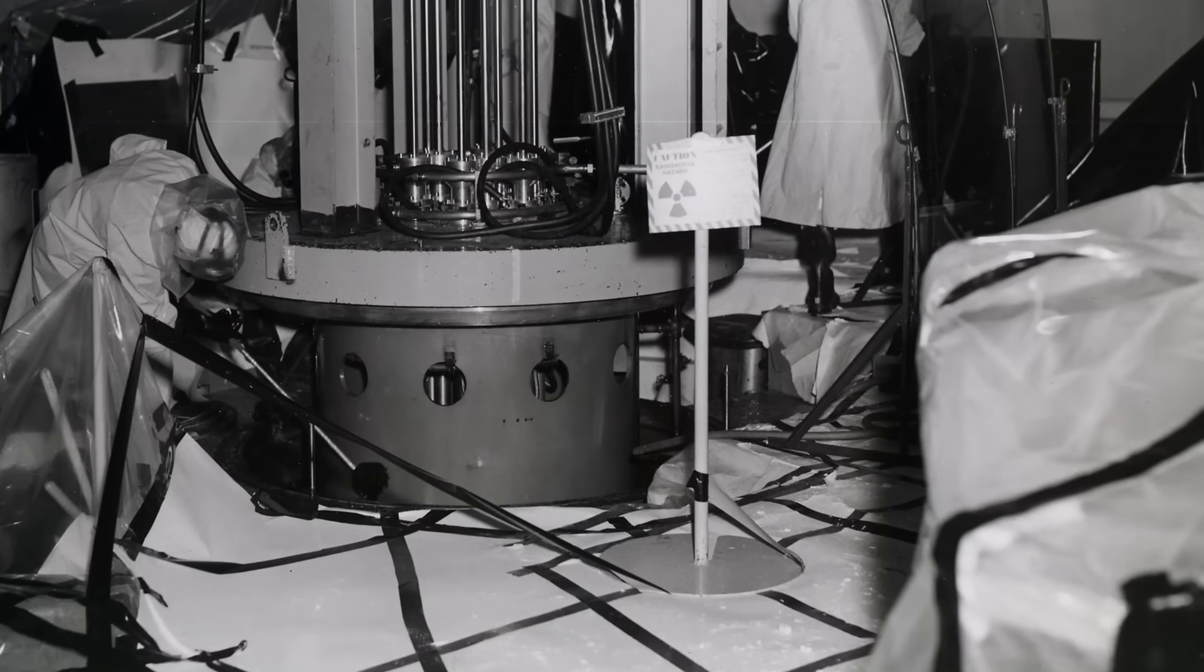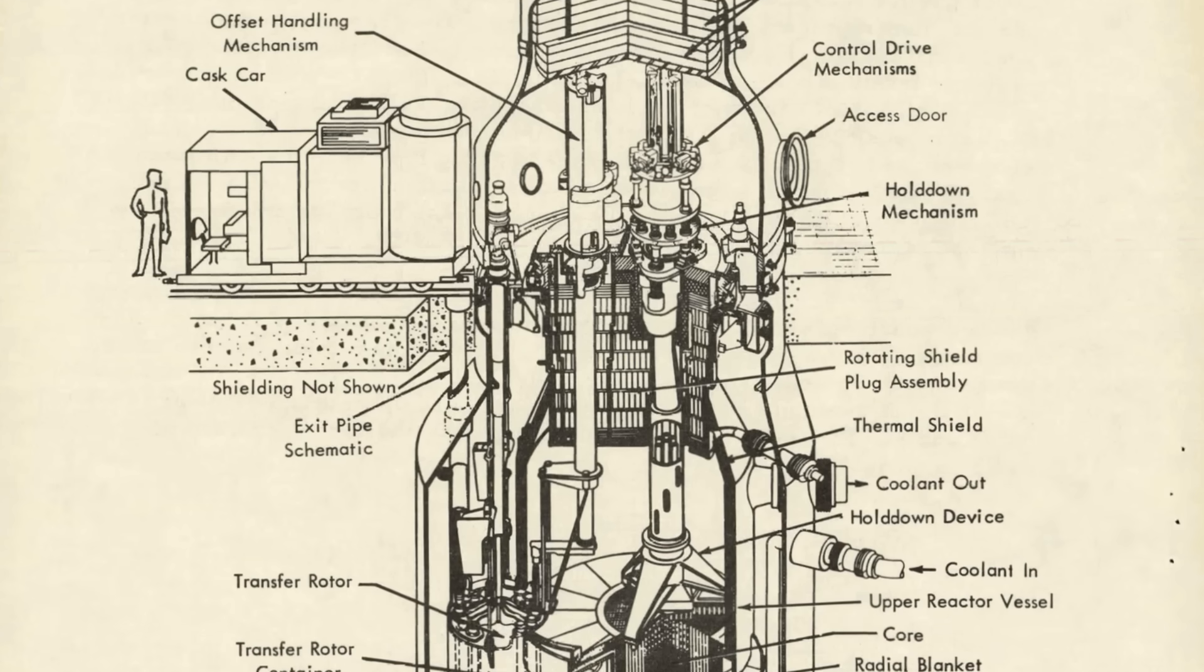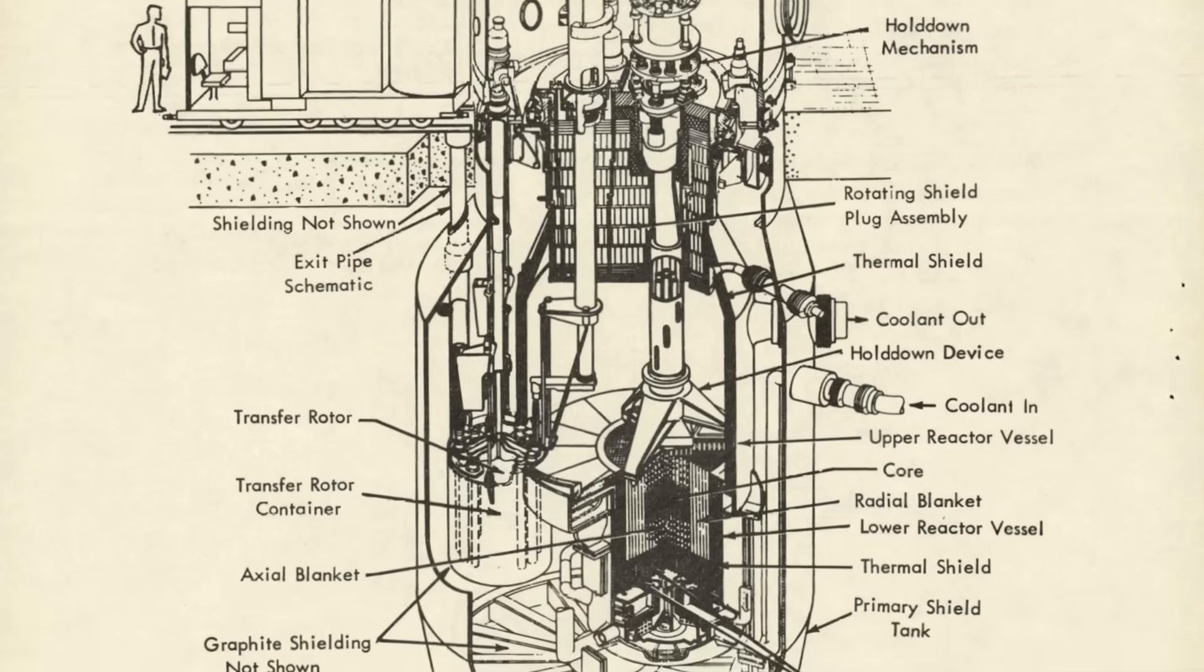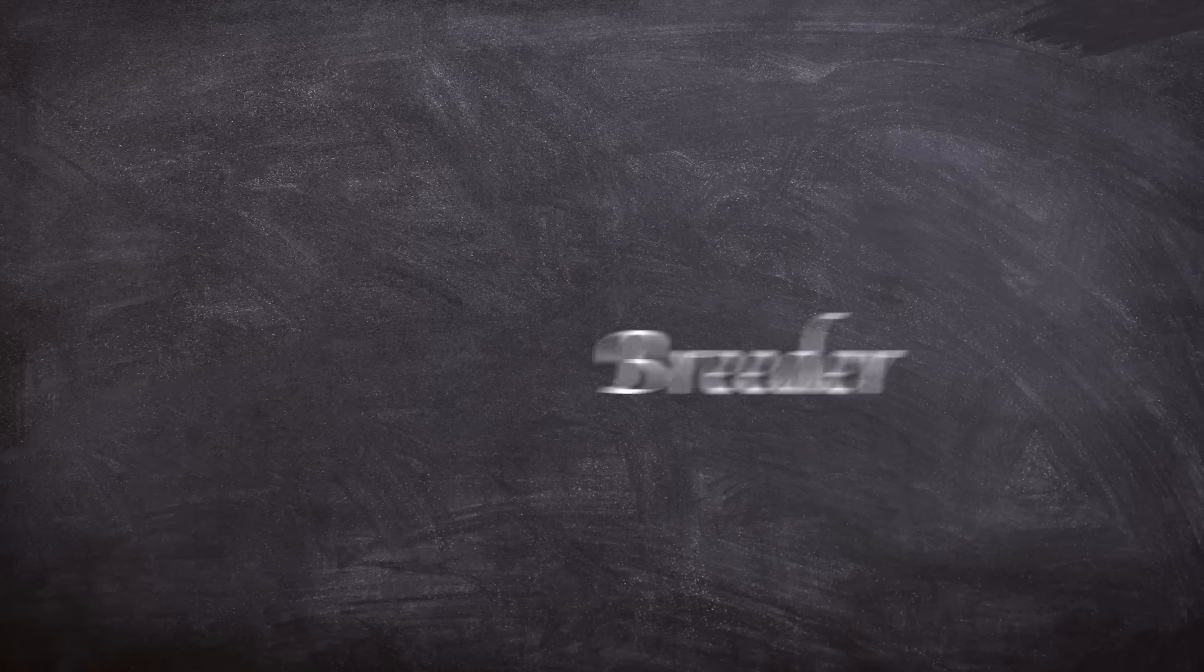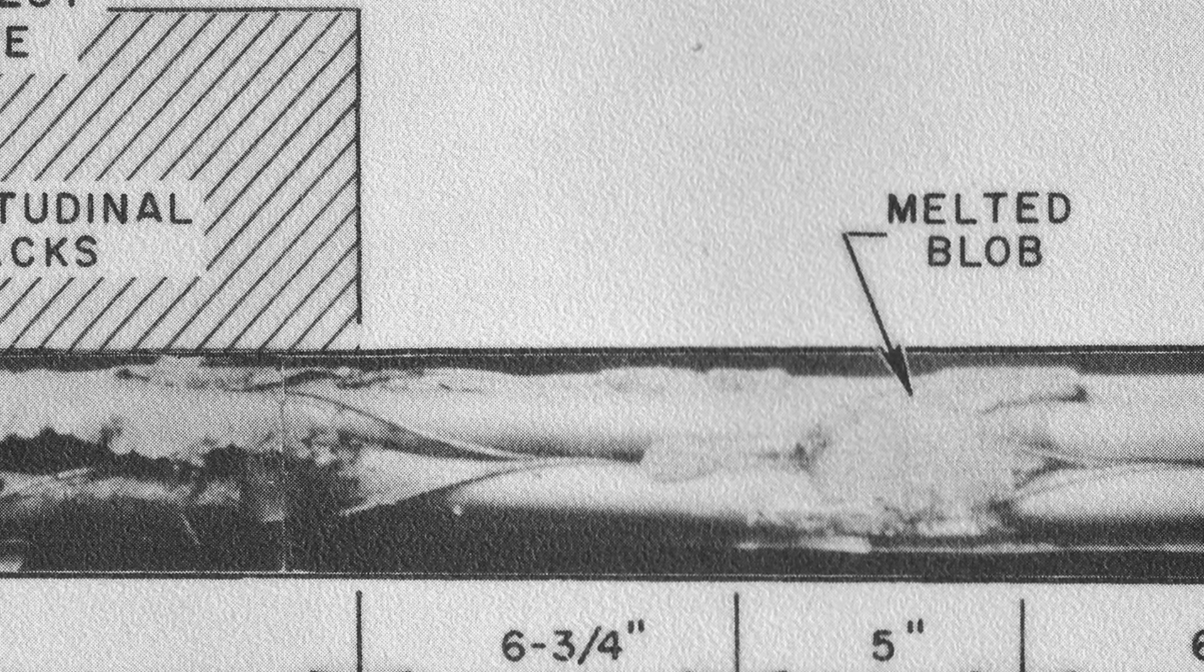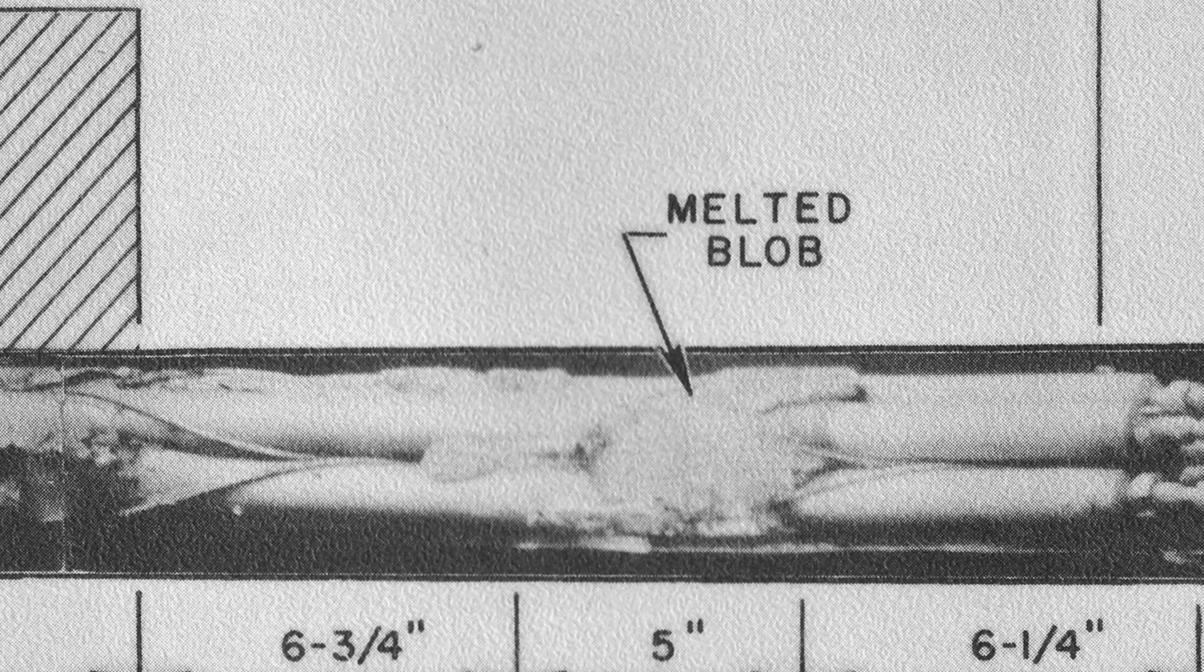This is the second video in a row that involves a partial fuel meltdown, and there's a fascinating footnote for a reactor design that never really took off in mainstream commercial power generation. Today we are looking at the 1966 Fermi-1 fast breeder reactor meltdown. This isn't the first time I've covered an incident involving a sodium-cooled fast reactor, and it probably won't be the last.